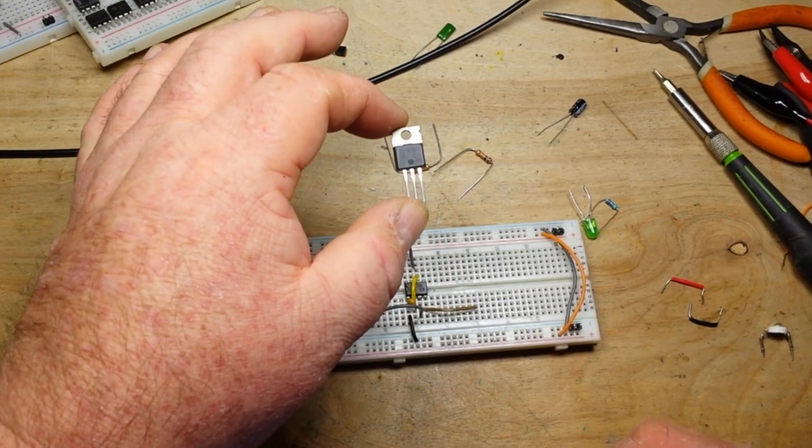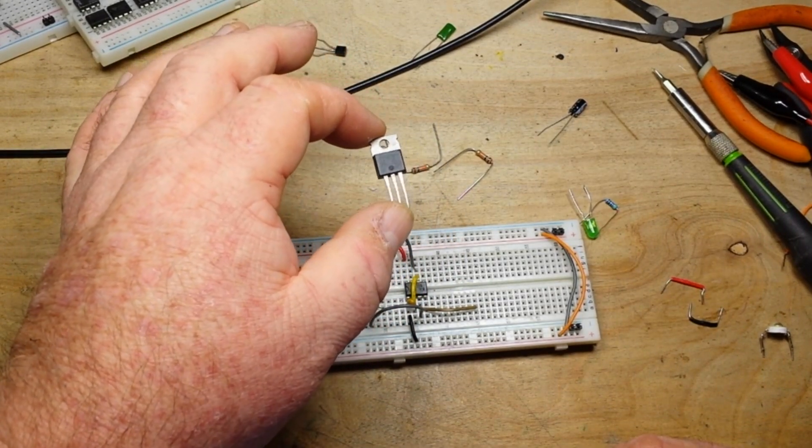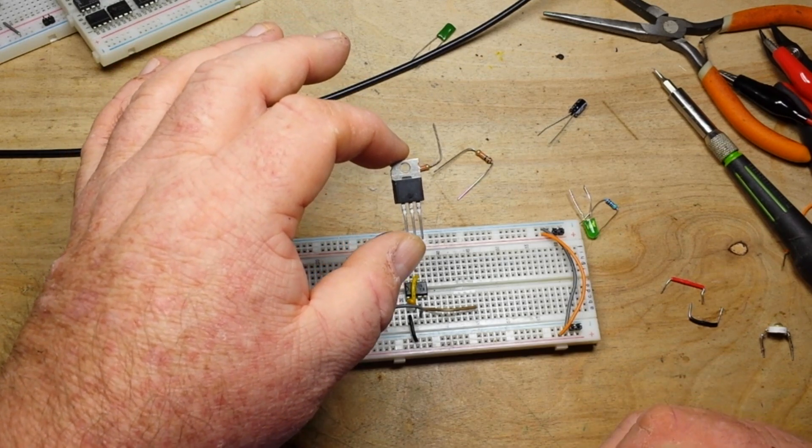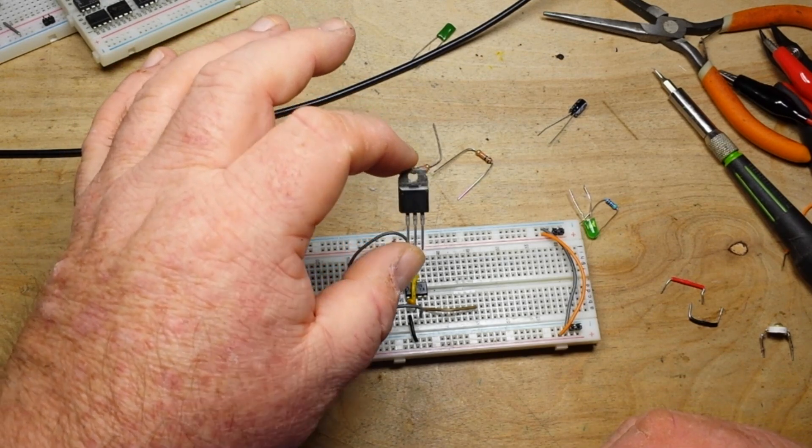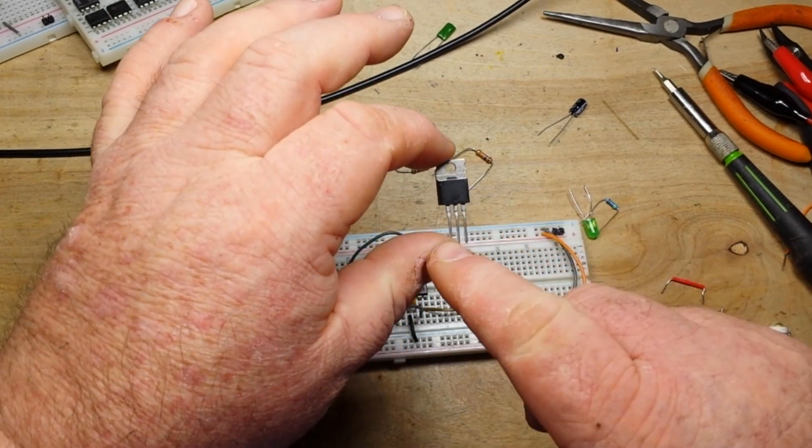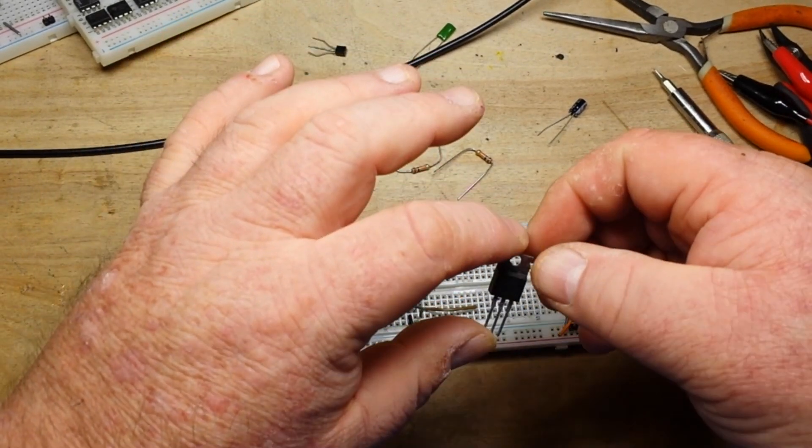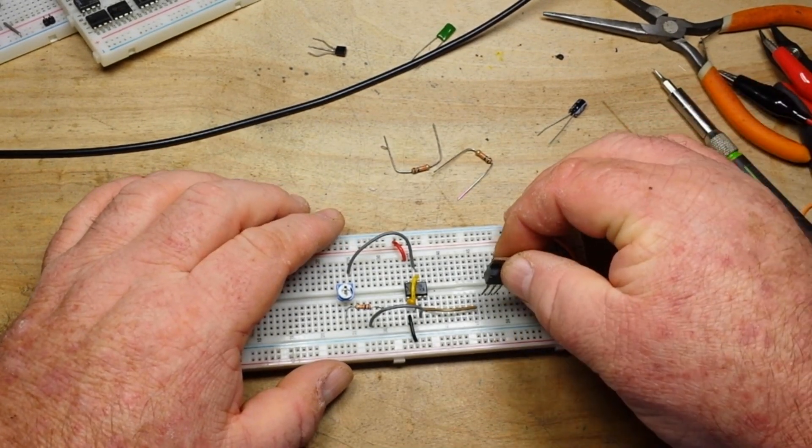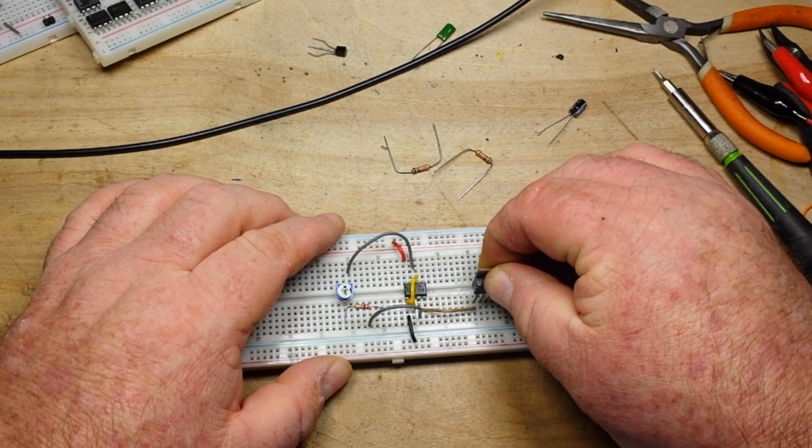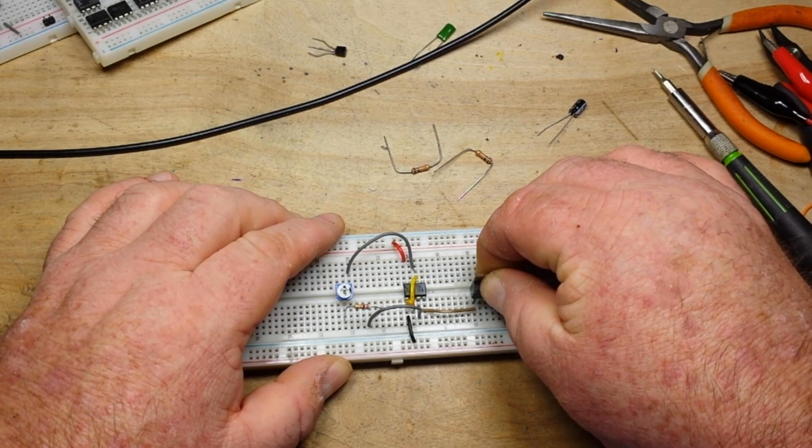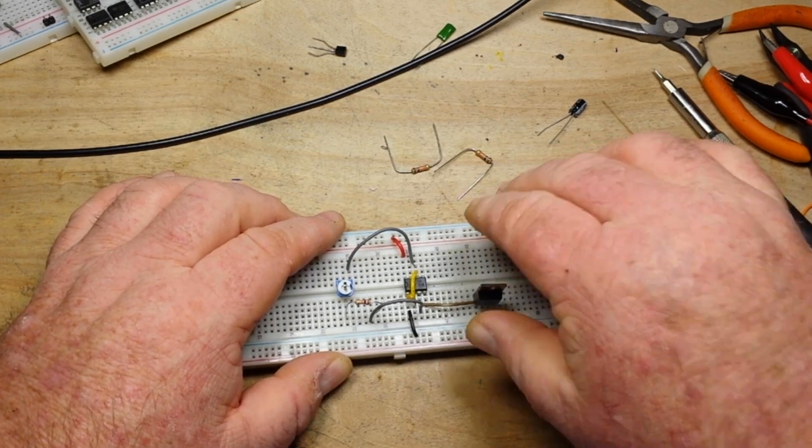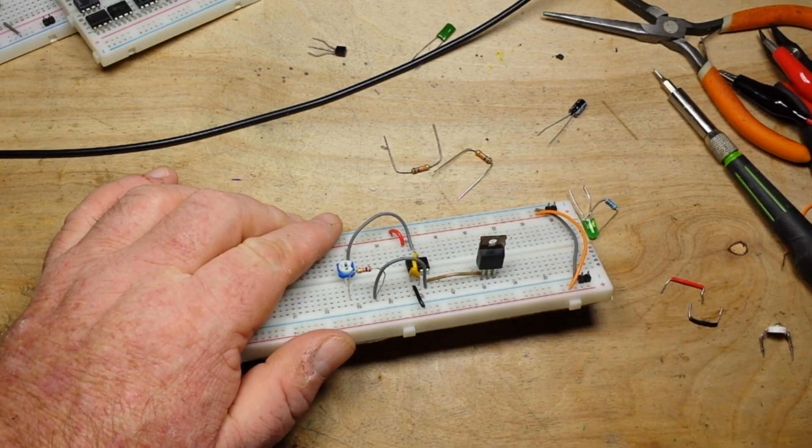It really doesn't matter which one you use as long as it's an N-channel. This is an IRLP2907, I believe. Anyway, it's gate, drain, source. So we'll be doing this as a low side switch. So we'll hook up the gate. Let's put this down here of the 555 timer, just like that.